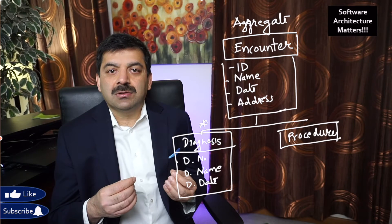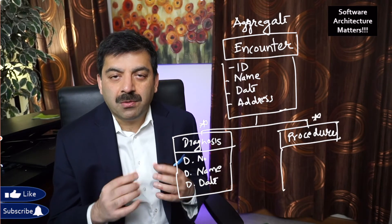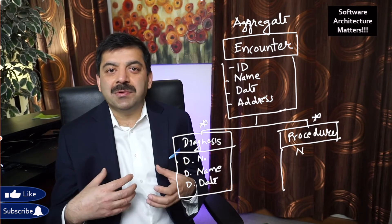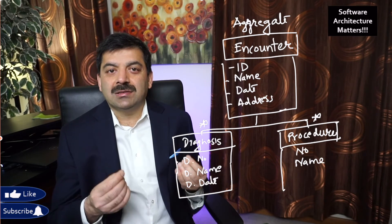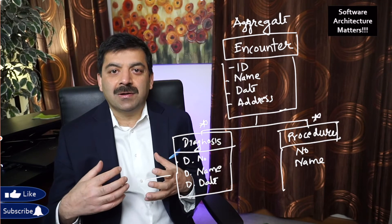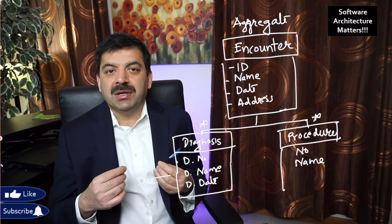So the procedure performed to fix the primary diagnosis is called primary procedure. And there may be other procedures to stabilize his high blood pressure. Those are all called secondary procedures.